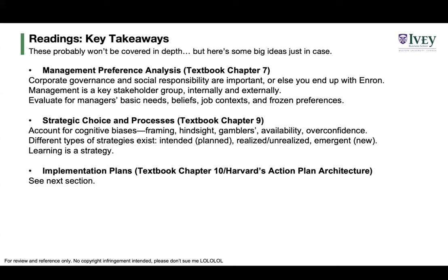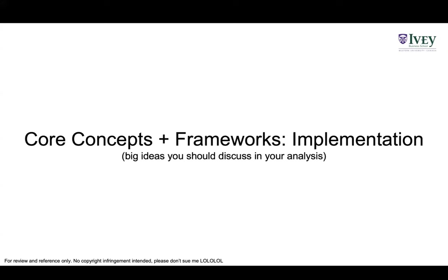For strategic choices, be aware of cognitive biases: framing (how the case is presented to you), hindsight bias (knowing how events ended), gambler's fallacy (assuming patterns in random events), availability bias (assuming your information is complete), and overconfidence. There are different strategies to mitigate these. Strategies themselves may be planned and executed, planned but not executed, or emergent — unplanned strategies you develop as you go.